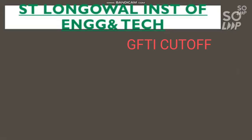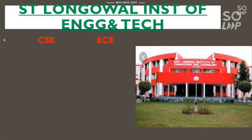The first GFTI is St. Longwall Institute of Engineering and Technology. Here is the cutoff for CS and EC branches — there is no IT branch in this GFTI. For General: CS requires 95.2 percentile and EC requires 94.7 percentile. For OBC: CS is 95 and EC is 94.5 percentile.